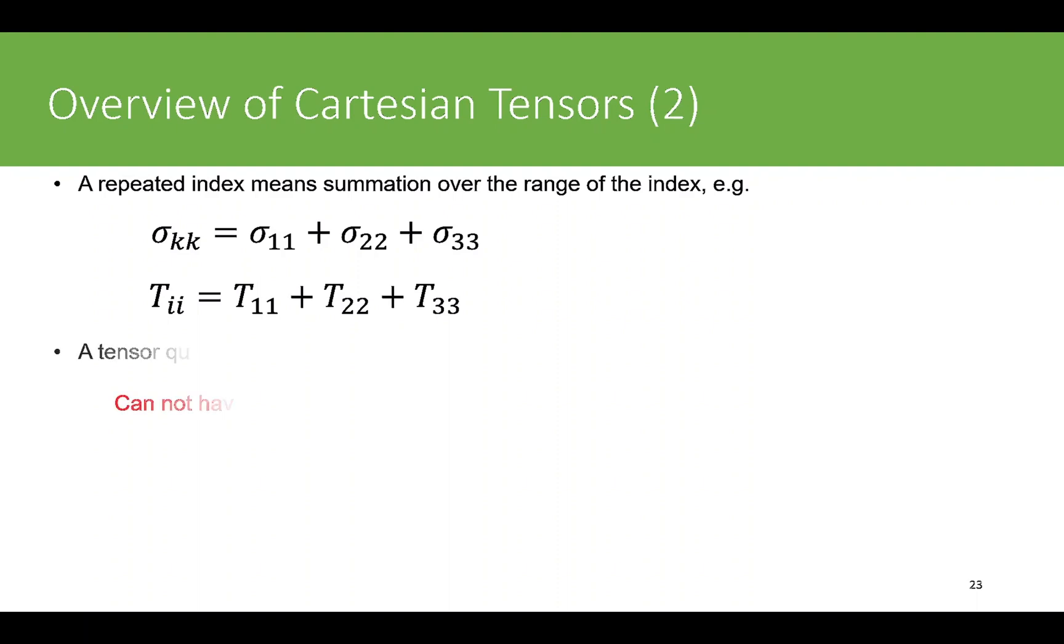A tensor quantity cannot have an index that is repeated more than twice. In the above example, you had two indices - they can repeat - but if you have three or more indices, then the indices cannot be repeated more than twice, otherwise something is wrong. For example, you cannot have